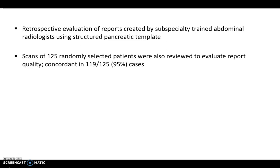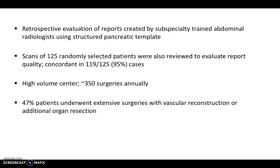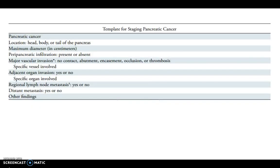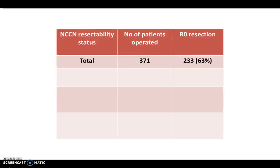The authors looked at 125 randomly selected CT images, and their evaluation of those images was concordant with the CT report in 95% of cases. It is important to remember that this is a very high-volume center — Roswell Park Medical Center performs almost 350 pancreatic surgeries annually, and almost half of these patients underwent extensive surgeries with vascular reconstruction or additional organ resection beyond the traditional Whipple's or distal pancreatectomy procedures. This is an example of the structured pancreatic template used at the center, which is pretty similar to the NCCN or the RSNA/SAR templates that we use.